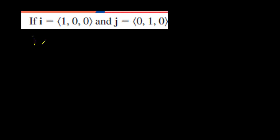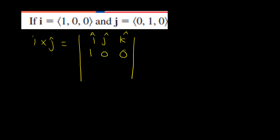Moving on to another example, where we have the vector i and the vector j, and we have to find i cross j. Just like with the case of two vectors, we'll have to do the same thing. So we write i hat, j hat, k hat in the first row. Vector i in terms of i, j, k is 1, 0, 0. And vector j is 0, 1, 0. Now we do the same thing.